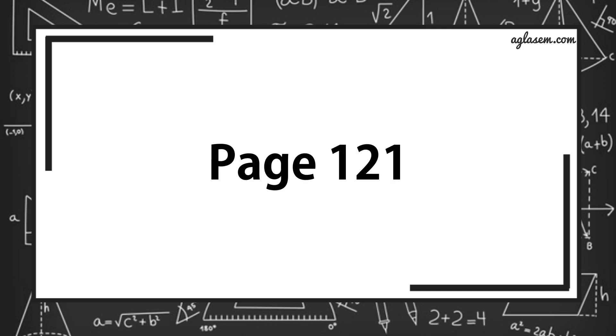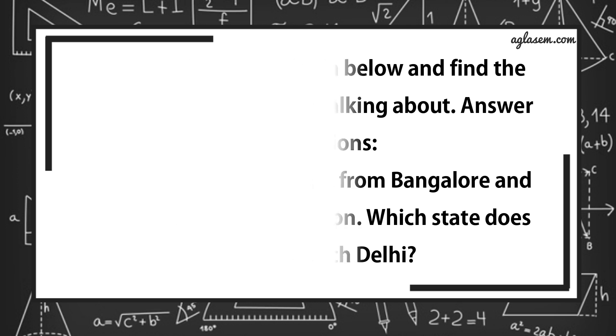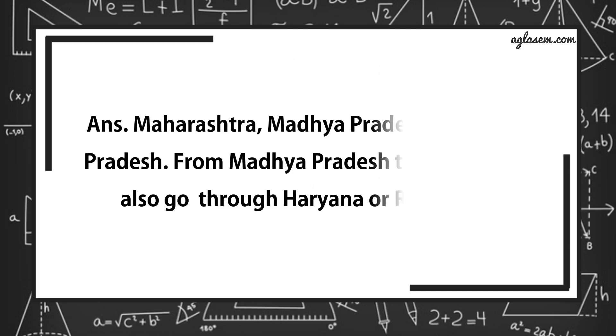Now turn to page number 121. Question number 1 says, look at the map of India below and find the states which children are talking about. The Karnataka team starts from Bangalore and moves in the north direction. Which state does it cross to reach Delhi? Answer is, from Bangalore to Delhi, the team crosses following states: Maharashtra, Madhya Pradesh, and Uttar Pradesh. From Madhya Pradesh, the team may also go through Haryana or Rajasthan.